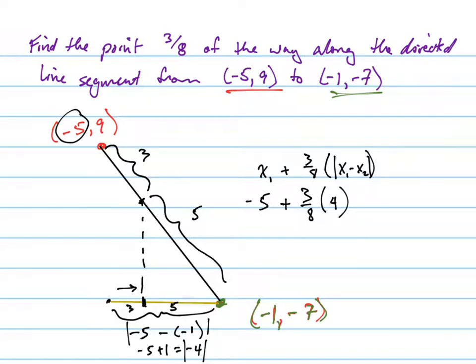And when I do that, I can reduce that 4 and that 8, so that would be 3 halves. So -5 plus 3/2 is going to be -3.5, -3 and a half. So that would be your x coordinate. The x coordinate is -3.5.